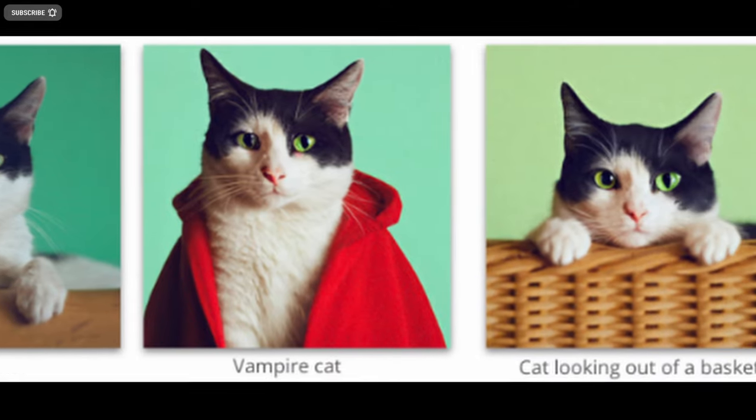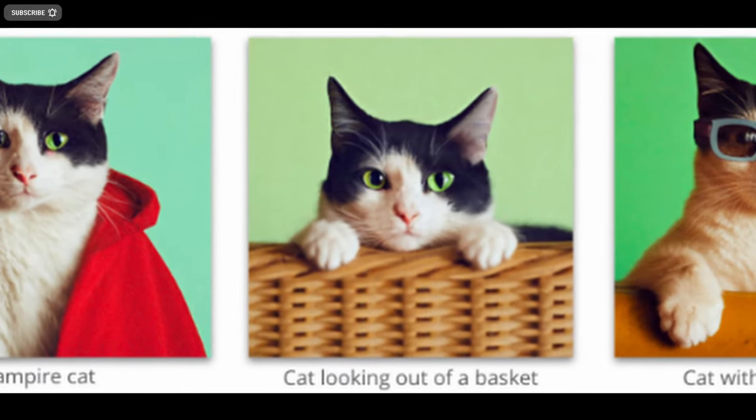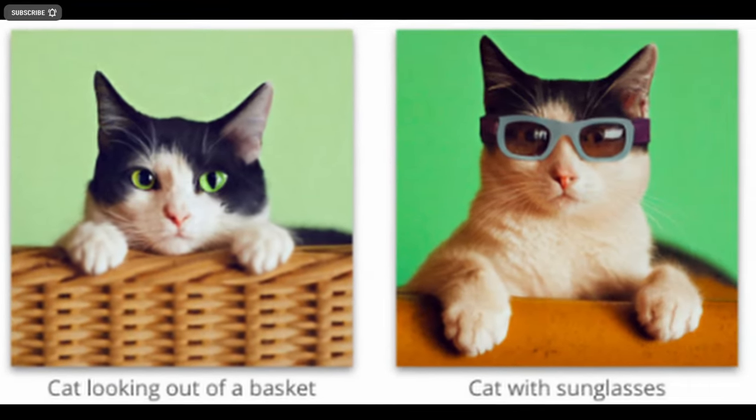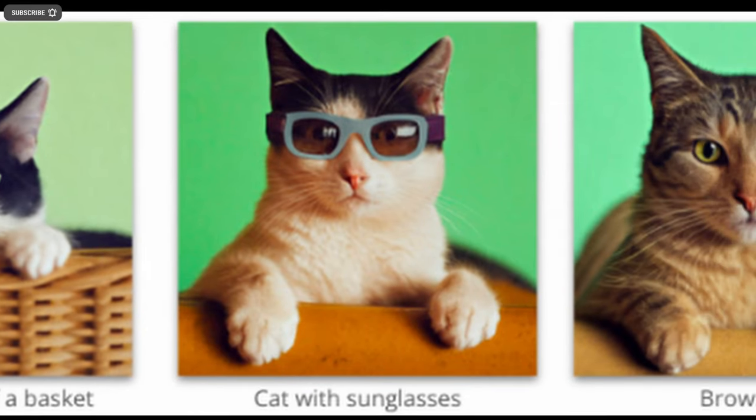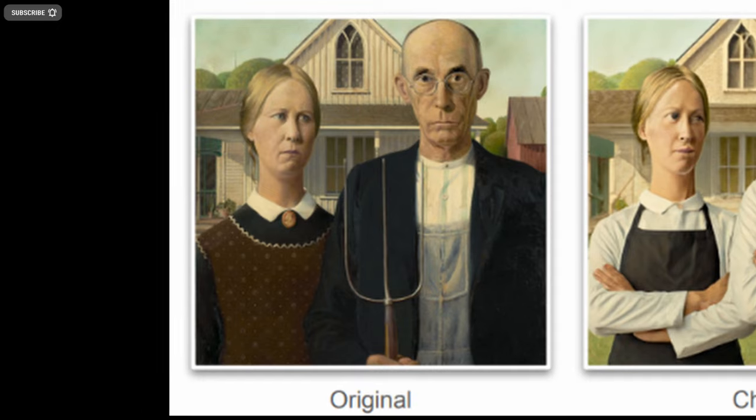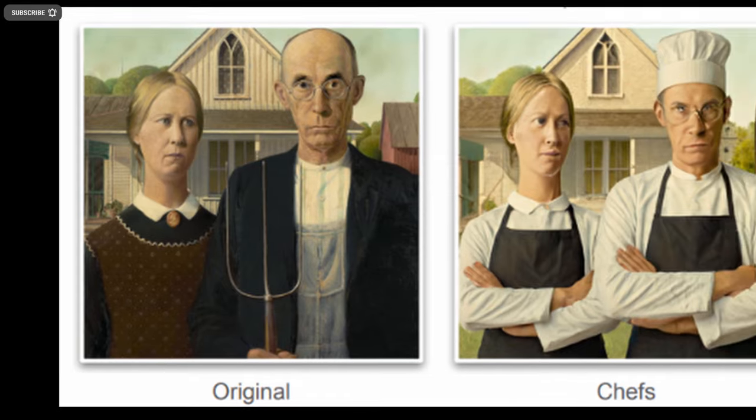Google AI has developed Unitune as a method to edit images by providing a textual description of the desired result, preserving high fidelity to the entirety of the input image, including the edited portions.